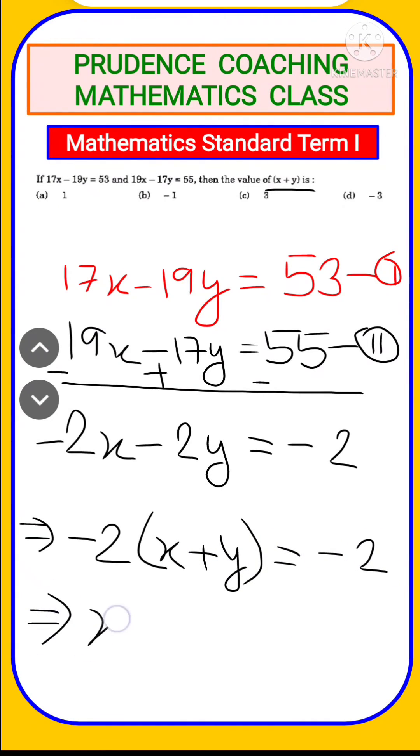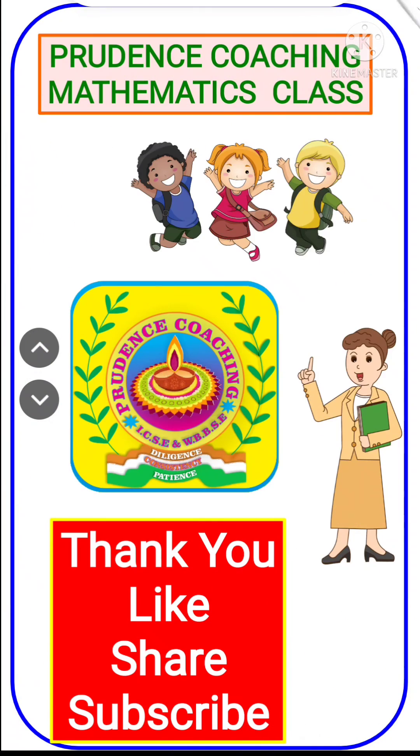Further solving, you get x + y = -2 divided by -2. This will cancel, leaving you with 1. So the value of x + y is 1, which is option 1.